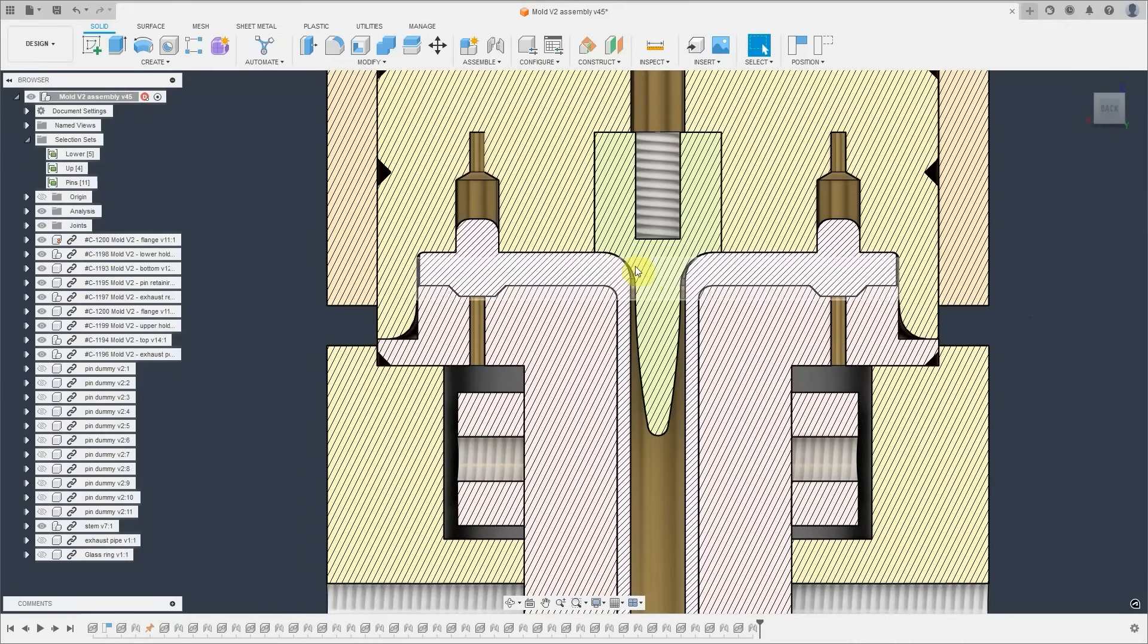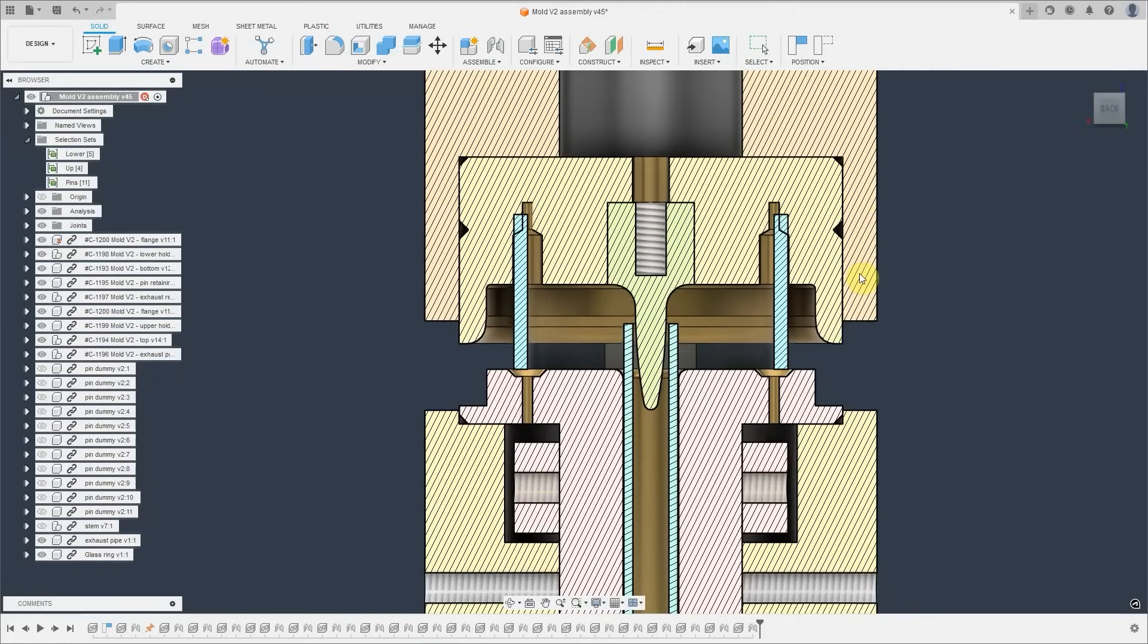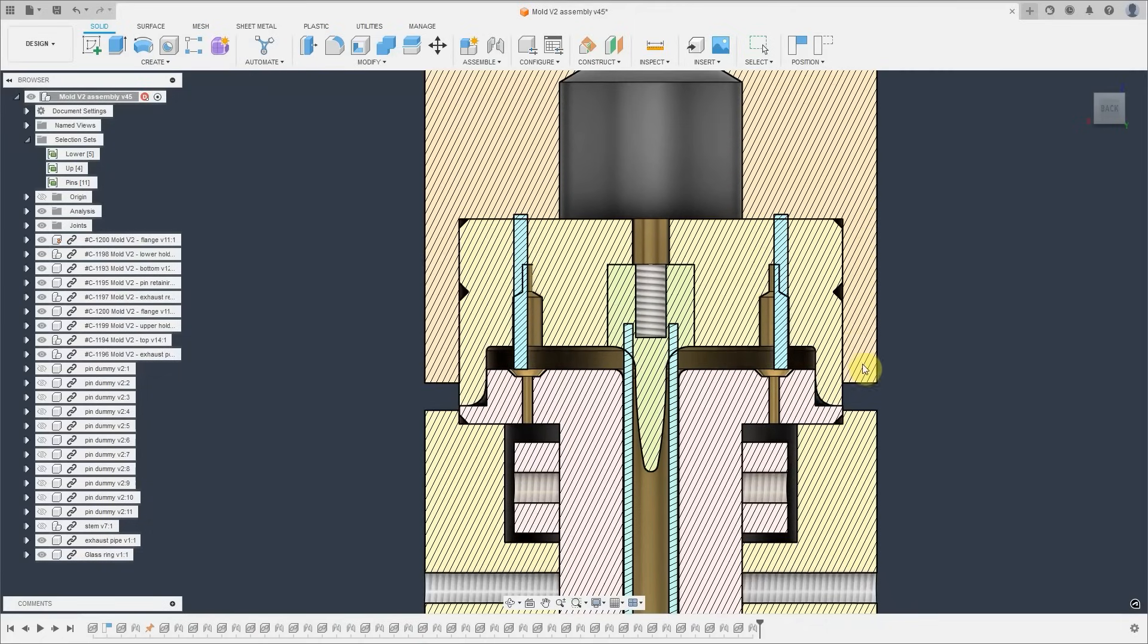This pin here in the upper section is here to enter the exhaust pipe and to push the glass aside so that it doesn't collapse and clog the exhaust pipe.